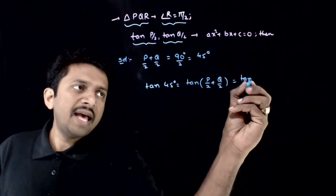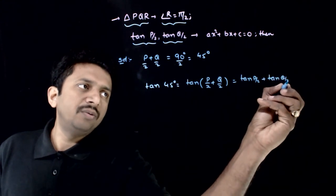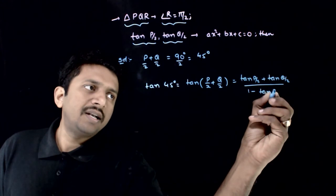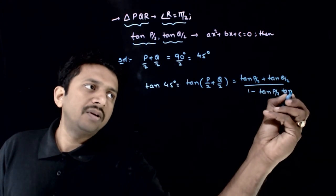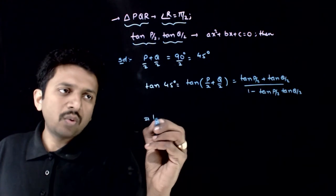That is equal to tan P by 2 plus tan Q by 2 divided by 1 minus tan P by 2 into tan Q by 2. So, this implies 1 is equal to.